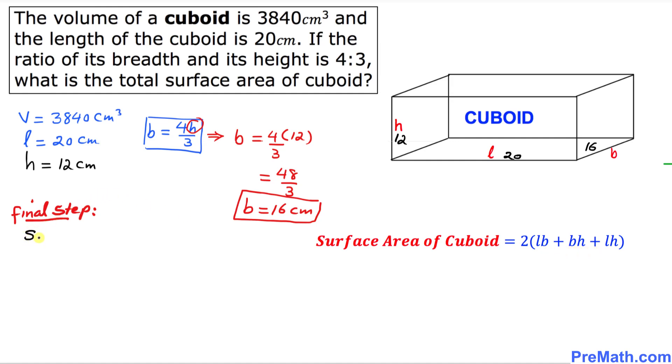Let me write it down. SA stands for surface area equals 2 times (Lb + bh + Lh). Let's fill in the blanks.